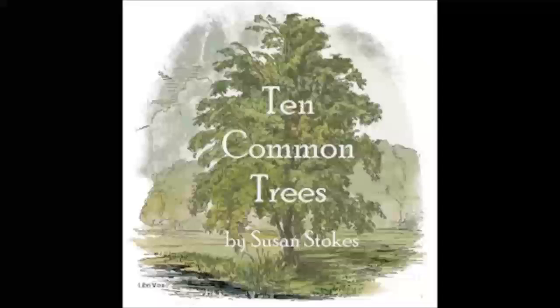It is thought it came to Europe from Asia. There its nuts had been used as food for horses, as they still are in Turkey. On this account, and because they look like the sweet brown chestnuts, they are called horse chestnuts. In southern Europe, they are fed to sheep, cattle, and poultry. While in Ireland, they are used in the bleaching of linen. So you see, the horse chestnut may be a very useful tree, although in America it is more often planted simply as an ornament.